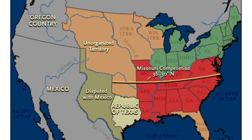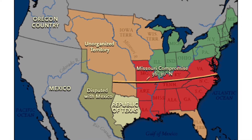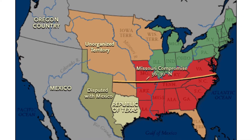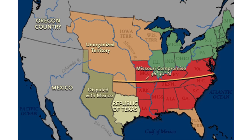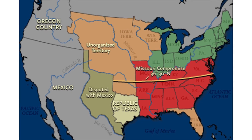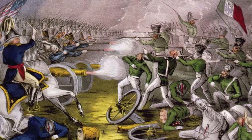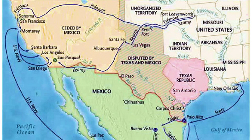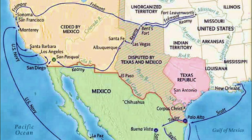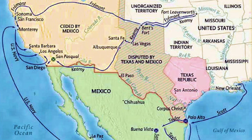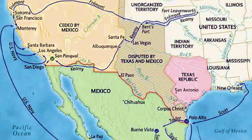Westward expansion sparked fierce debate, as the southerners furiously expanding westward hoped for a west with slavery, while northerners wanted it to be free. When America defeated Mexico in the Mexican-American War, the controversy over whether or not to allow slavery in the newly claimed territory pushed the country significantly closer to civil war.